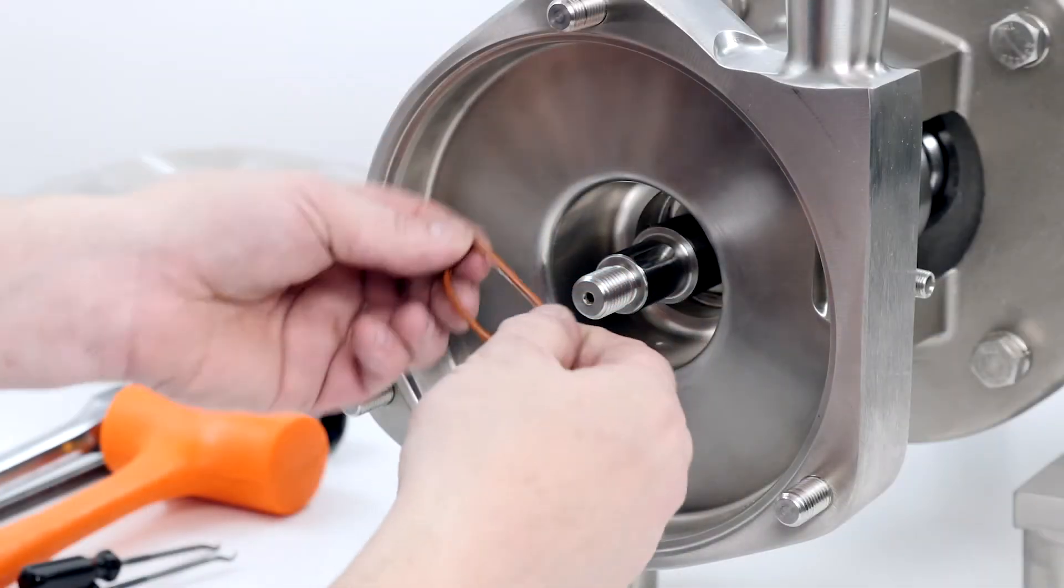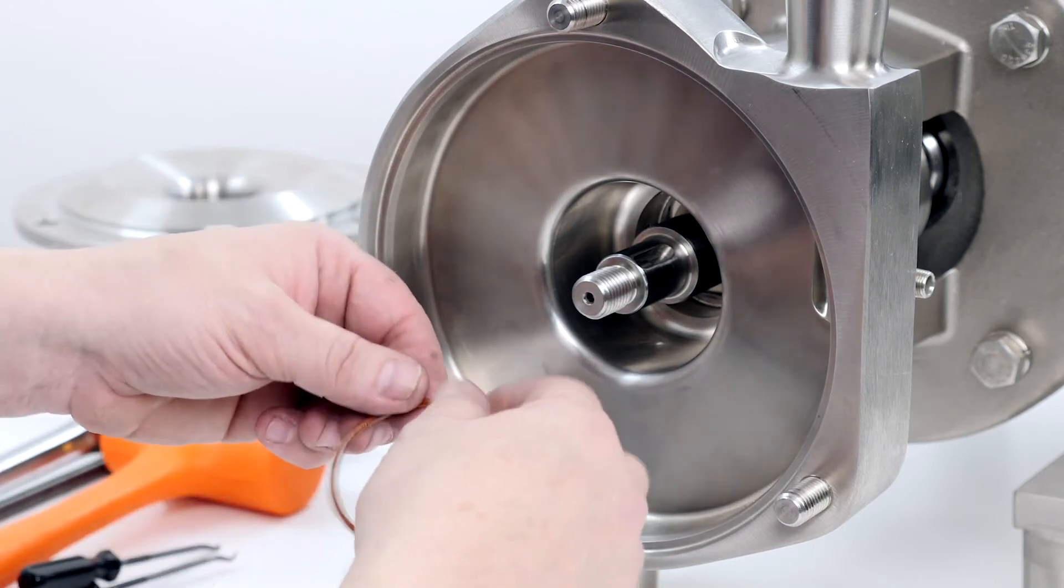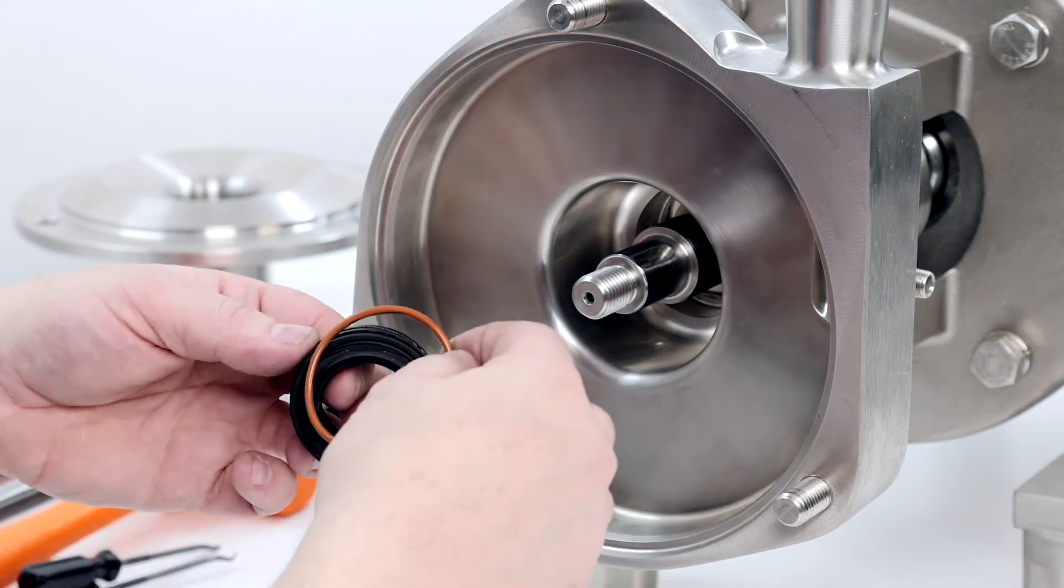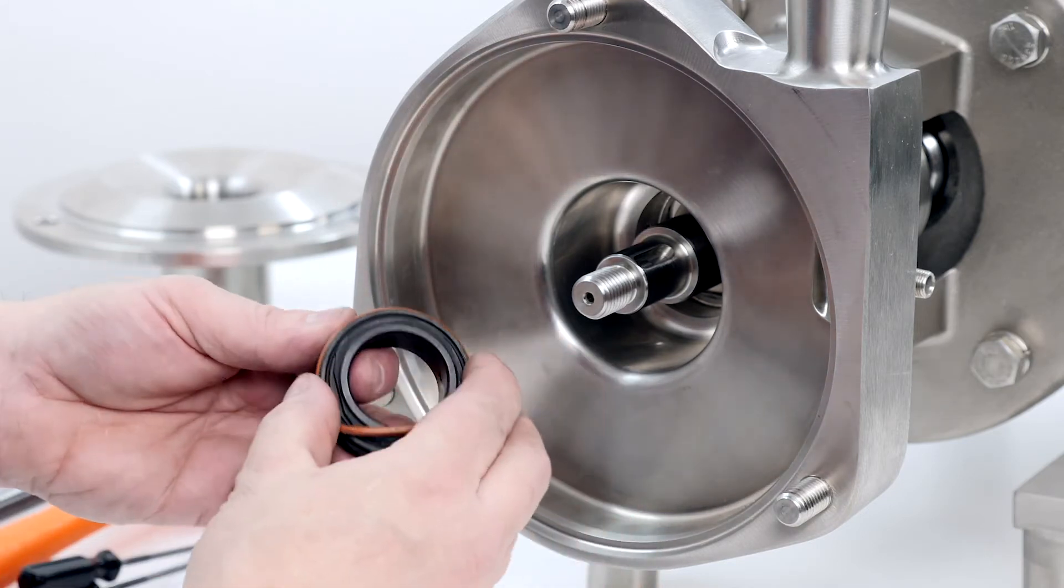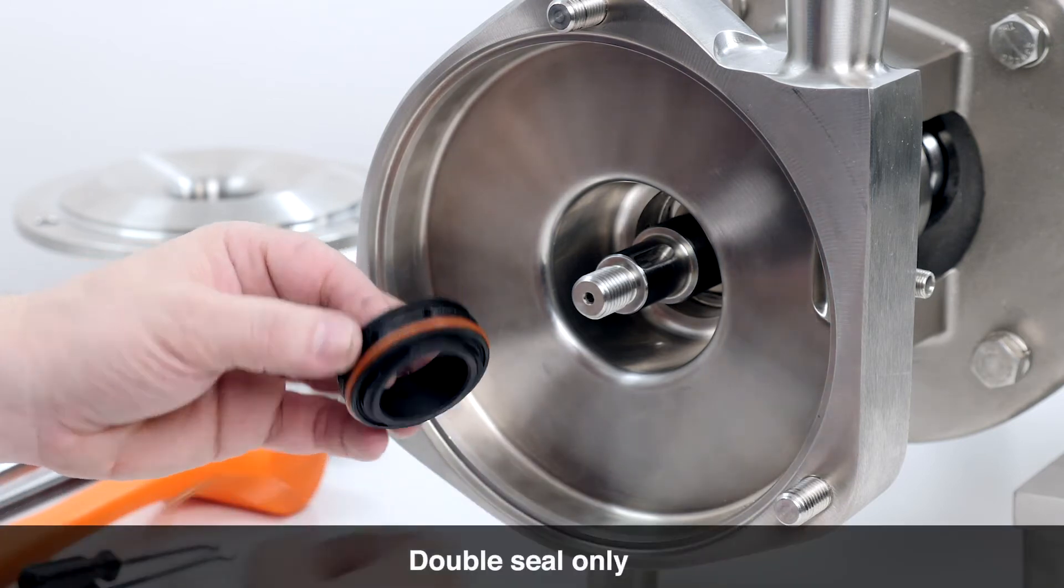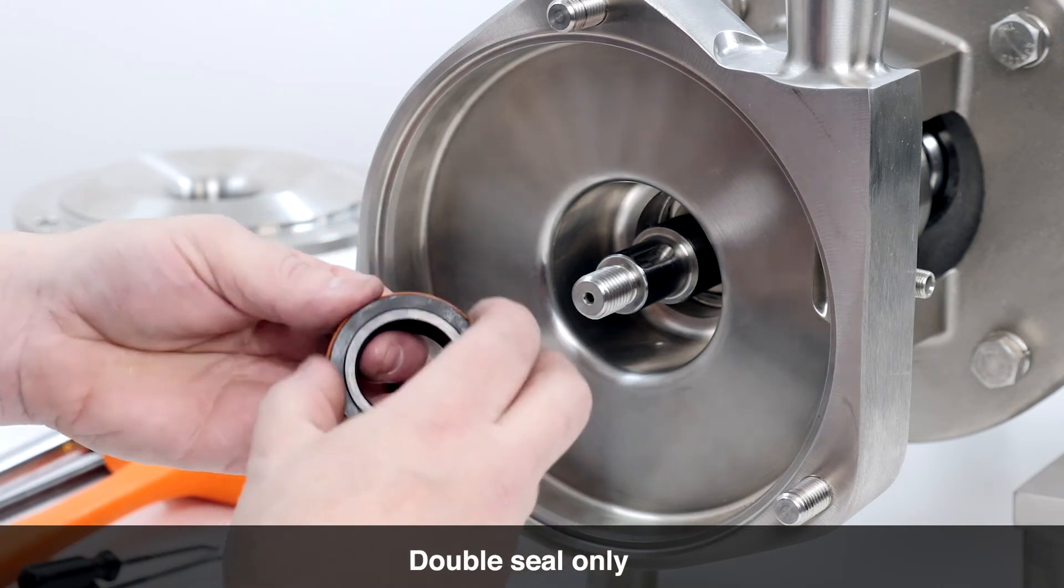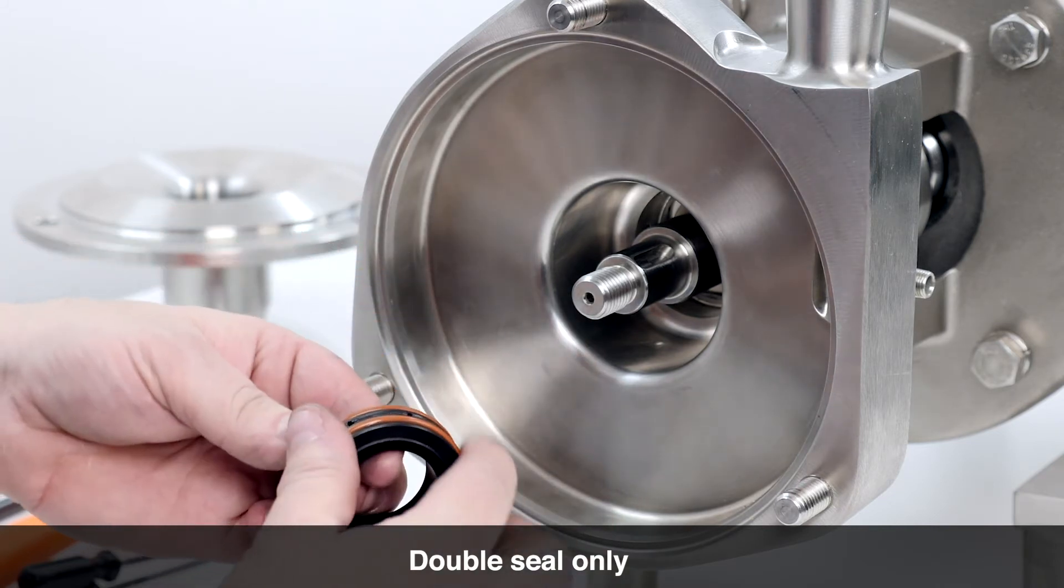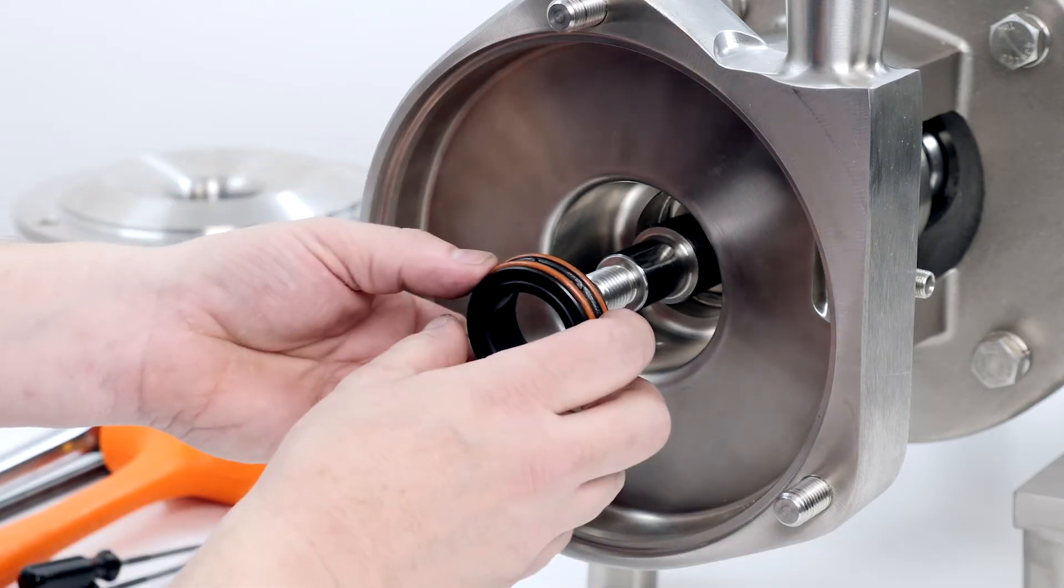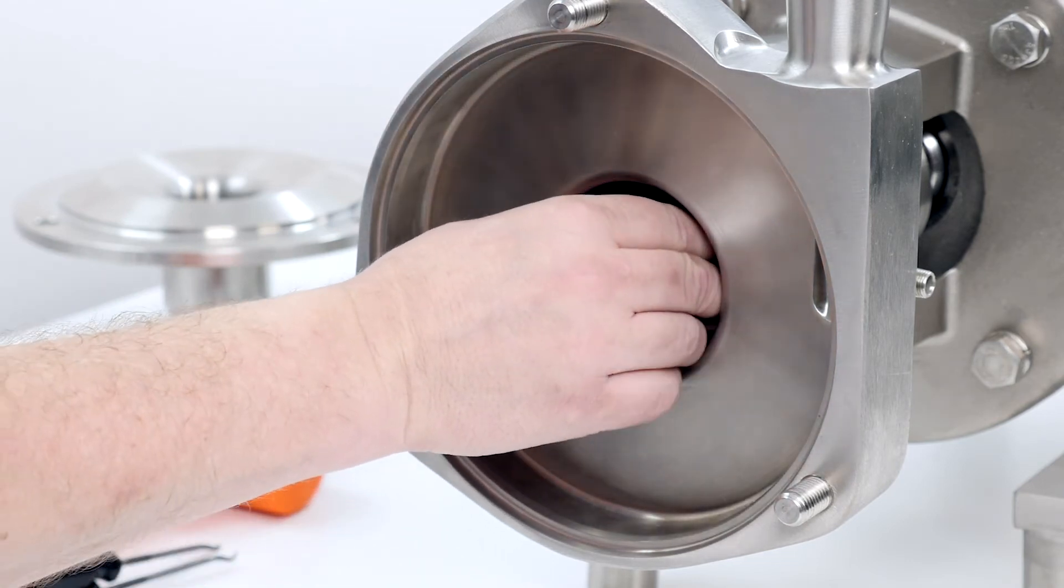Lubricate and install the stationary seal O-ring onto the stationary seal. Double seal only: Install a second O-ring into the additional groove. Install the stationary seal into the housing, making sure to align flats on the seal with the flats on the housing.